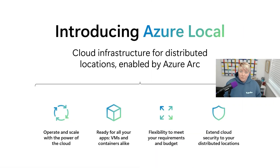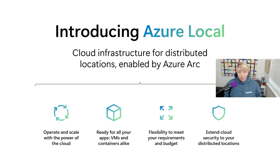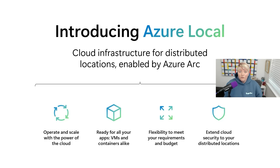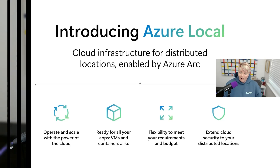Azure Local is part of the Microsoft Adaptive Cloud Strategy. Azure Local allows you to leverage the power of the cloud and scale your infrastructure in a location that makes sense to you. Azure Local can run your technologies from different eras but also work with more modern cloud native technologies. You can size it to fit your needs and also think about security processes because it is a secure by default product. Azure Local is cloud infrastructure for your distributed locations that is enabled by Azure Arc.